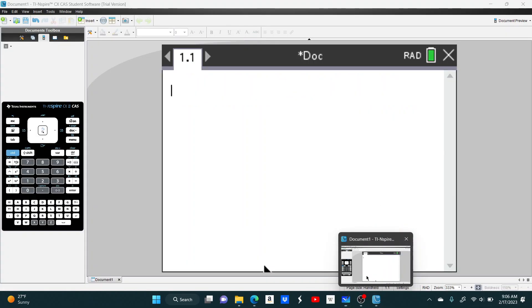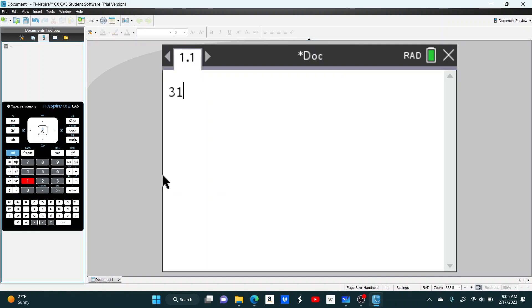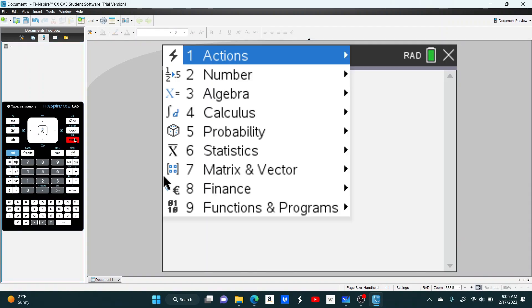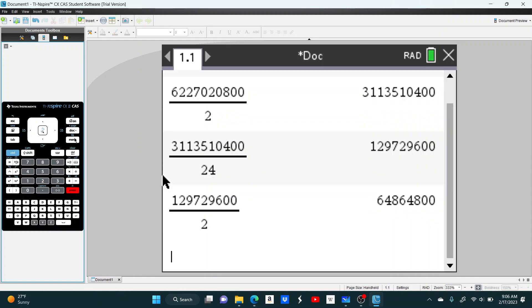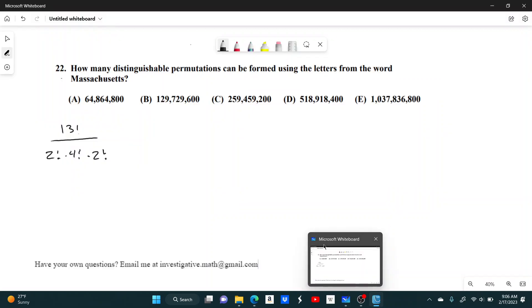And if we see what this equals to, let's see, we get 13 factorial, divided by 2 factorial, which is just 2, divided by 4 factorial, which is 24, and then divide by 2 again. So, we get, what is that? Like, 64 million. And, yep, looks like that's answer choice A.